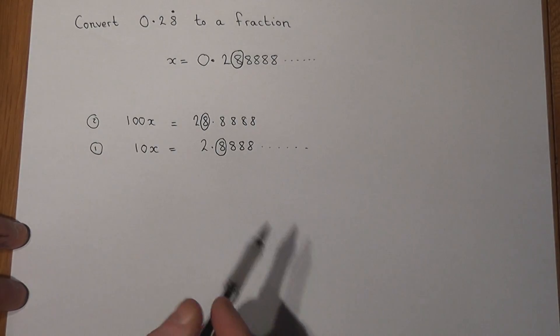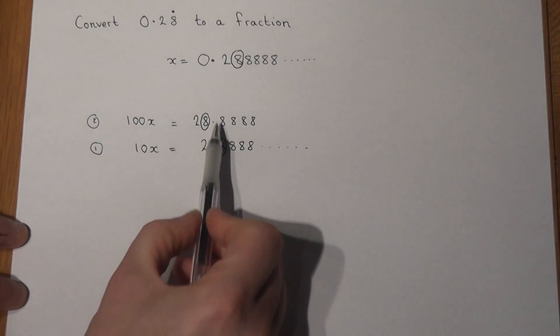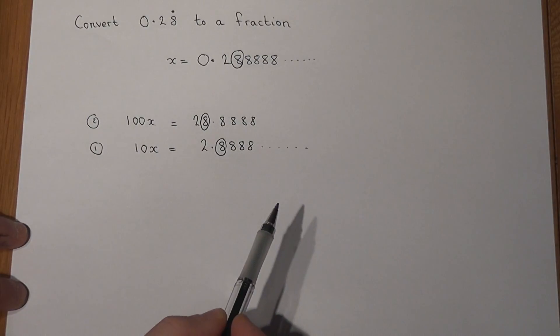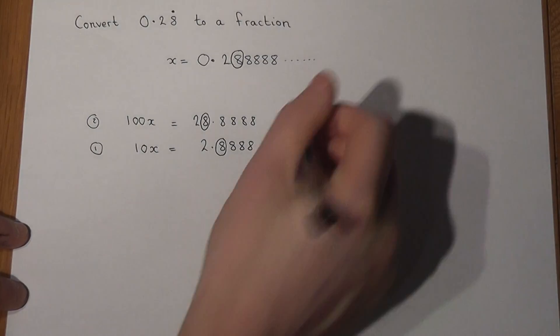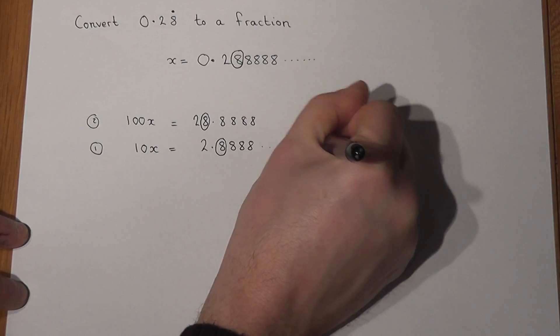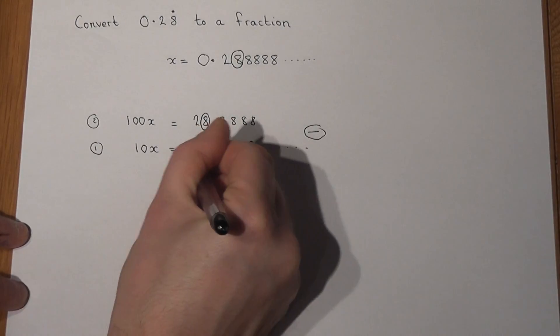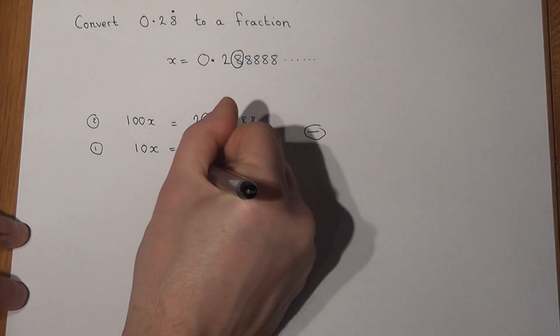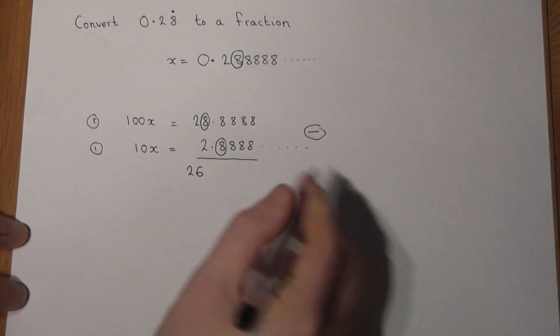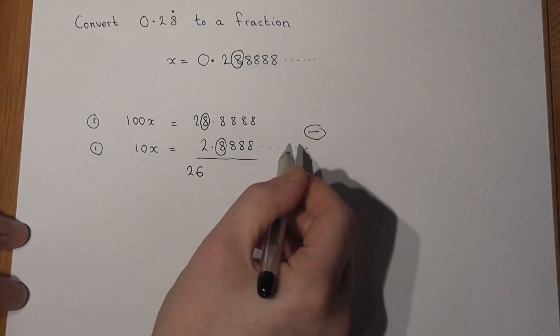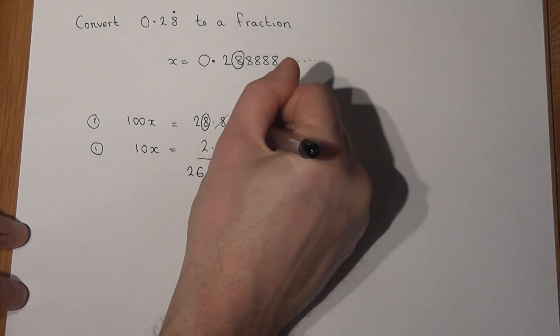Now what's special here is that after the point all the eights line up. So if I now do a subtraction, then 28 take away 2 just equals 26. But all of the eights after the point will just cancel off.